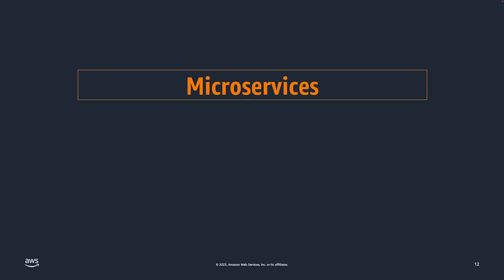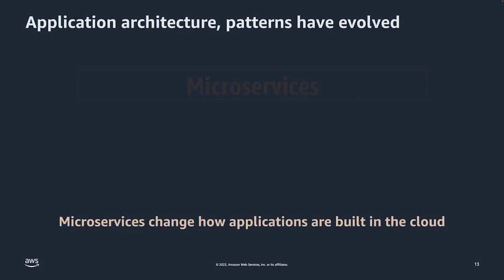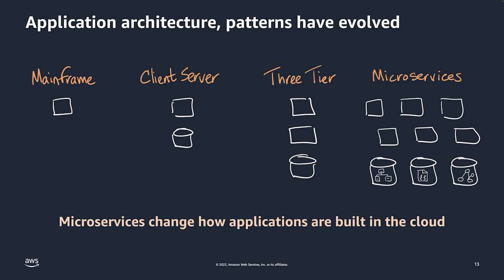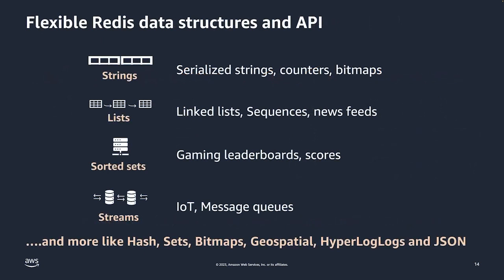Where we've seen a lot more traction for MemoryDB is in microservices. Tom talked about the evolution of applications — in the 60s and 70s, mainframes were the thing; in the 80s, the client-server approach was taken; in the 90s, three-tier architecture started taking traction. Lately, with the evolution of the internet, we've seen microservices as the core feature for creating new applications. One of the many things that Redis provides is rich data structures that allow you to create multiple use cases — sorted sets for gaming leaderboards, streams for message queues, message brokers, or IoT, and many others.